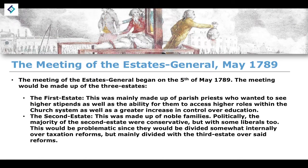The Second Estate was made up of the noble families. Politically, the majority were conservatives, relatively linked to the ideals and principles of monarchy, but there were some liberals within this group as well. The combination of mostly conservatives and a minority of liberals would be problematic, since they would be divided internally over taxation reforms, and also divided with the Third Estate over those same taxation reforms.